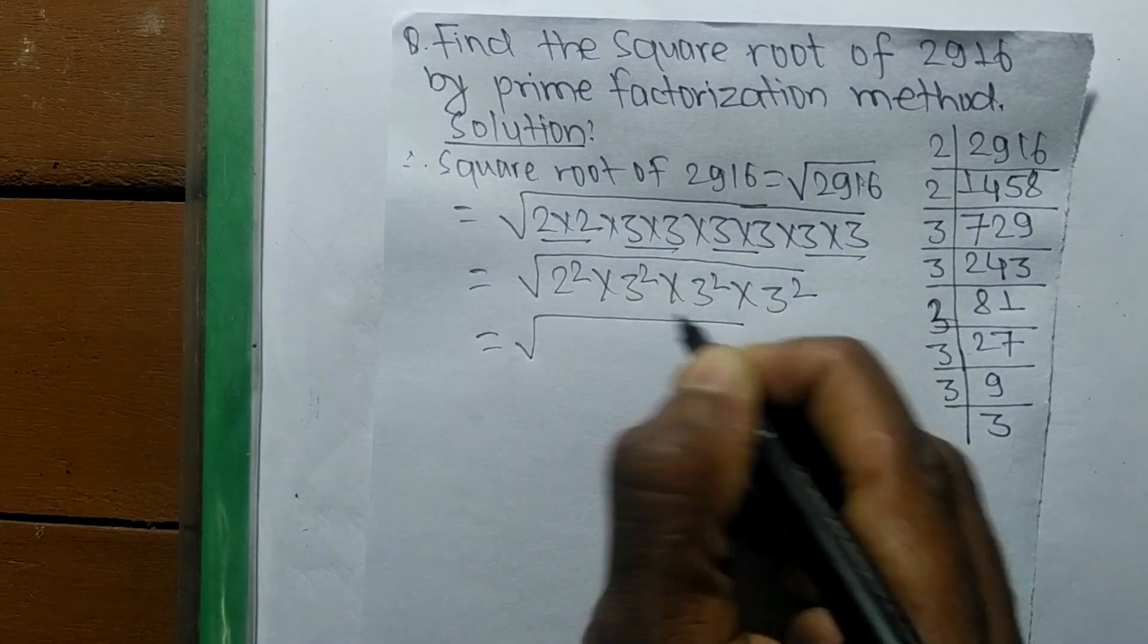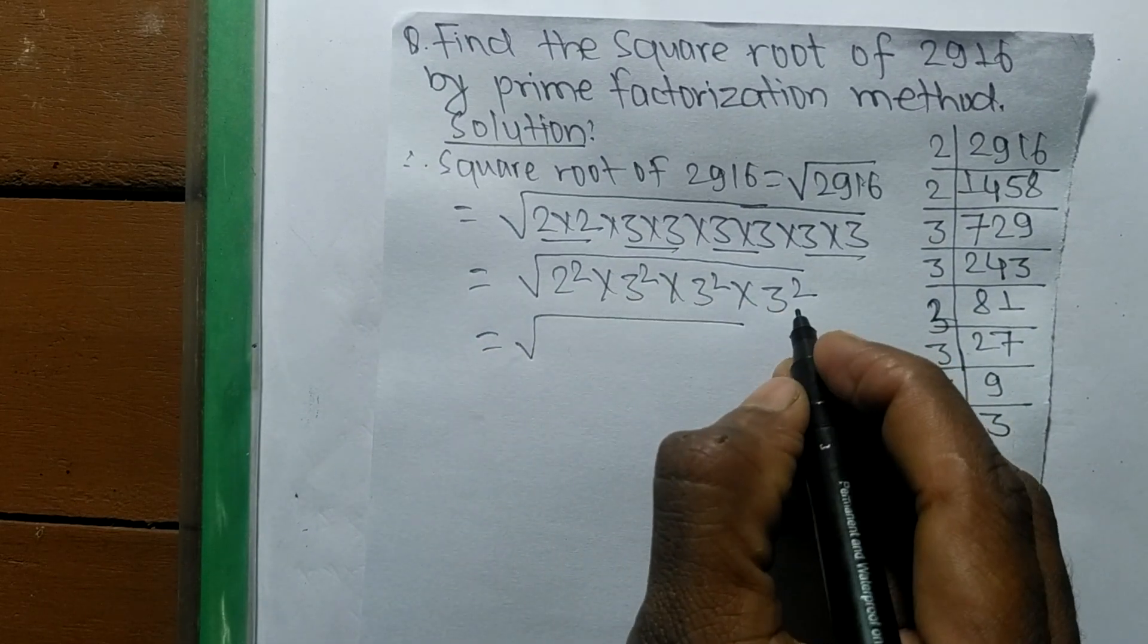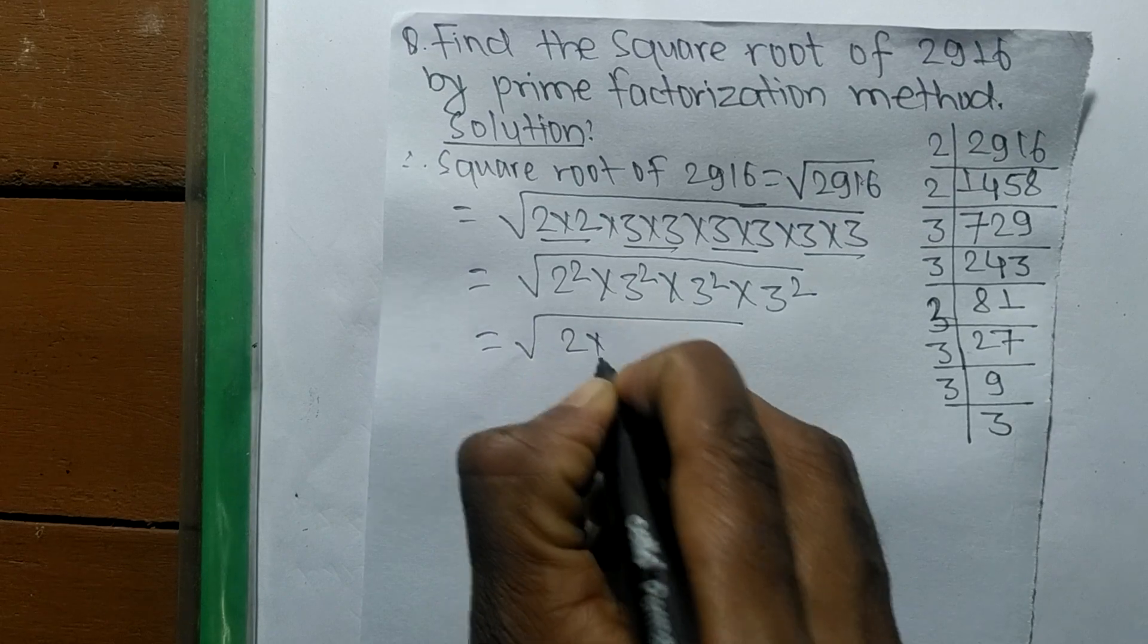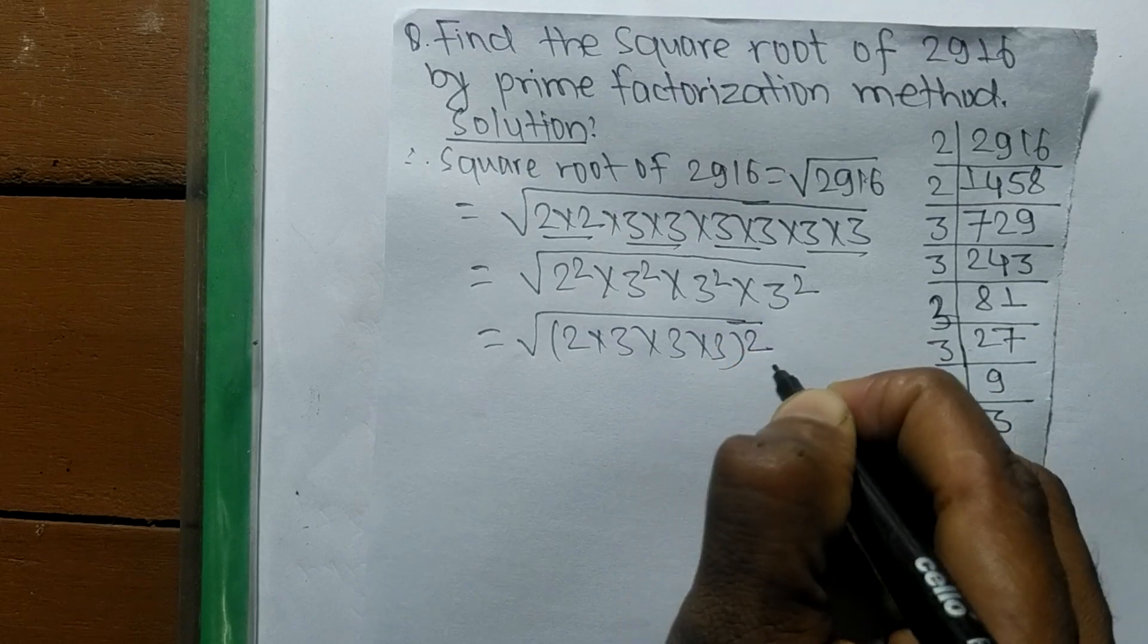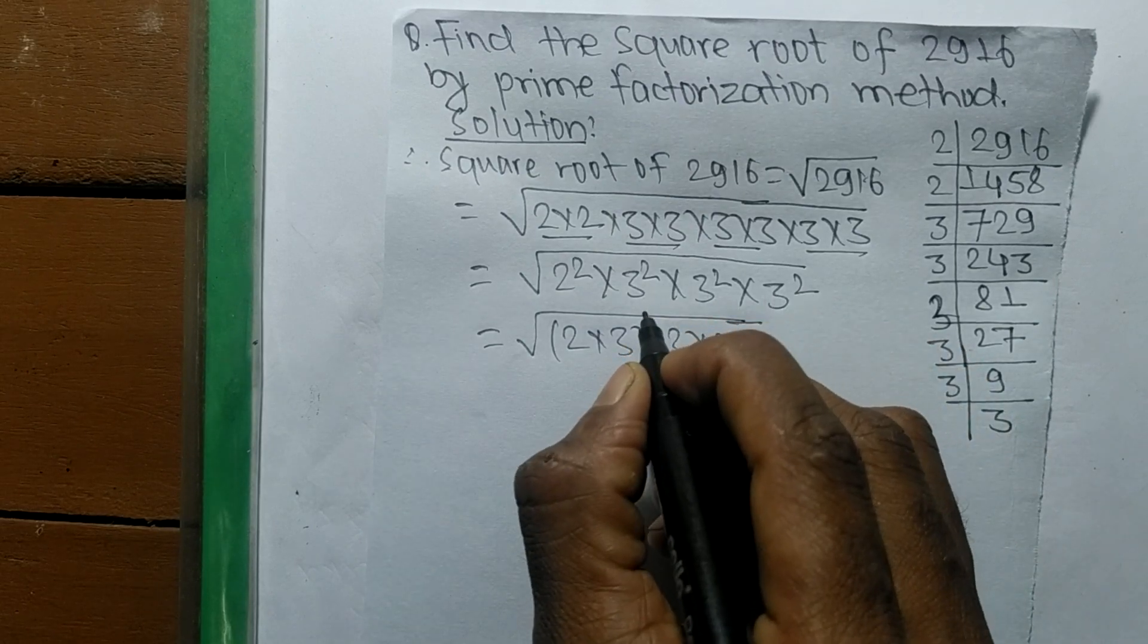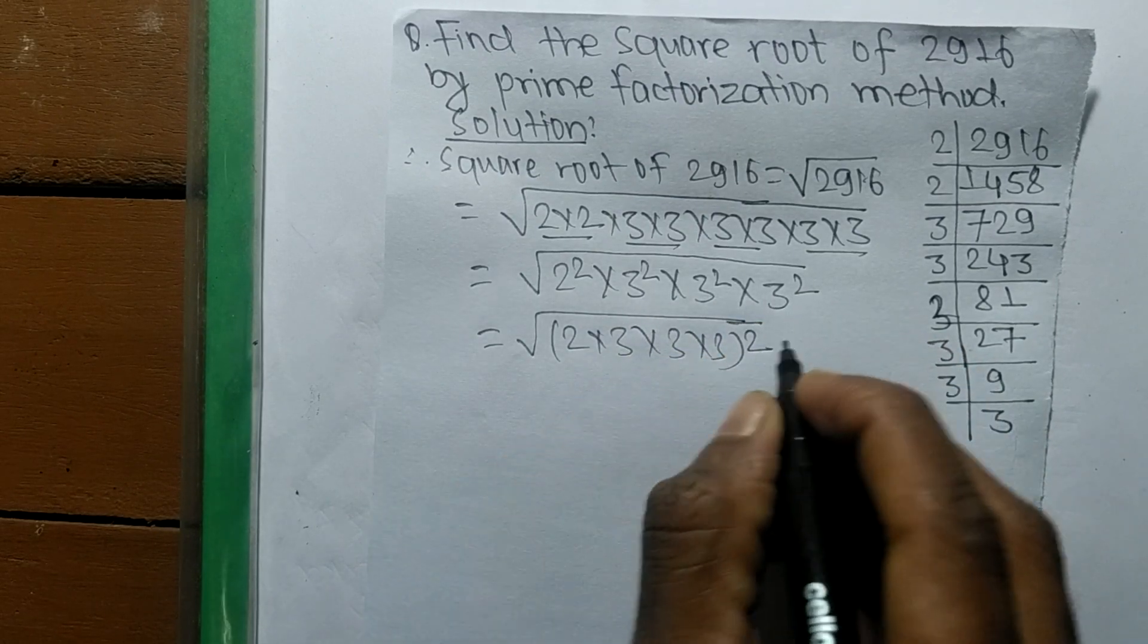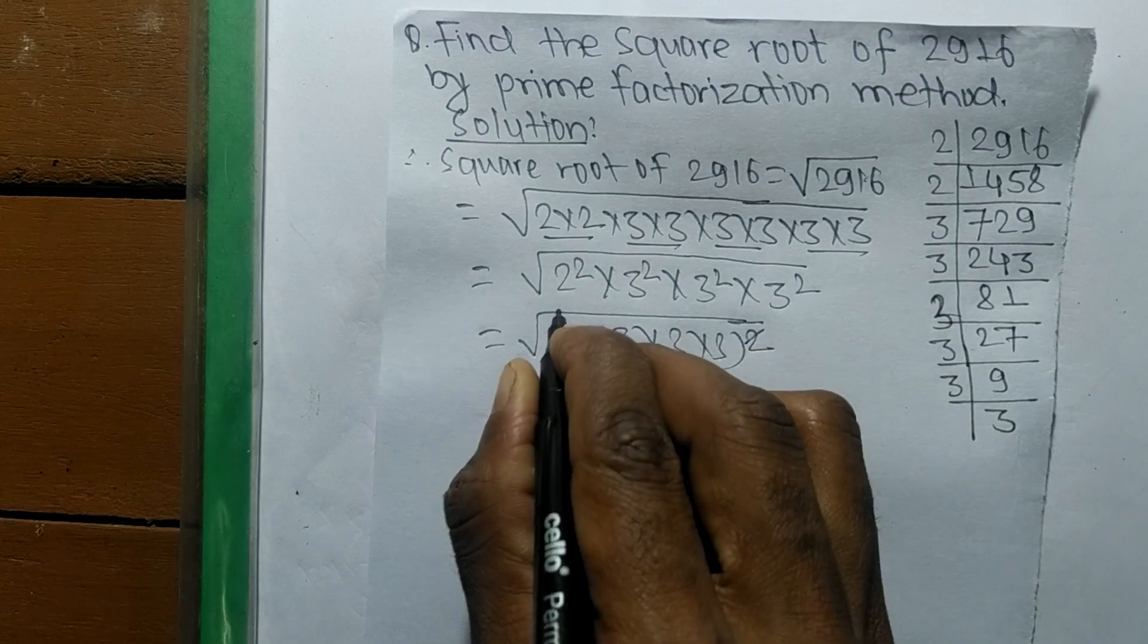So all these numbers contain a square. So we make it 2 into 3 into 3 into 3 whole squared. So we took the square as a common from all these numbers. So now a square and a square would cancel each other.